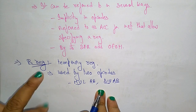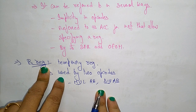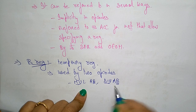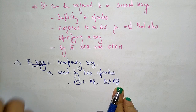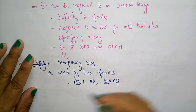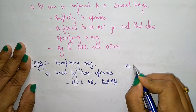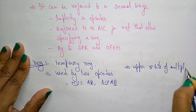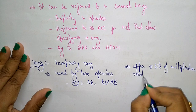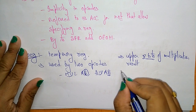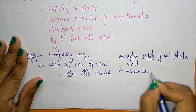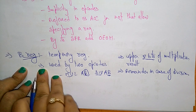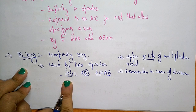The B register acts as a temporary register for multiplication and division. It holds the second operand and will hold part of the result — specifically, the upper eight bits of the multiplication result. In division, the B register holds the remainder.